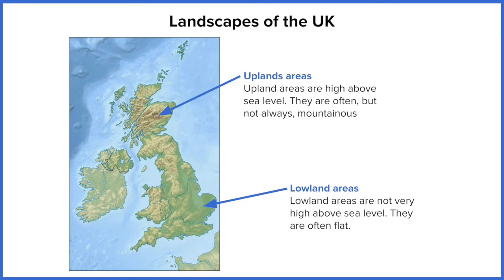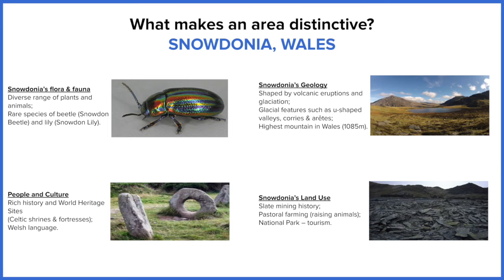Let's have a look at one example of a distinctive landscape. In this case we're going to look at Snowdonia in northern Wales. Now, upland and lowland areas are found in quite a few different places around the UK, so that doesn't necessarily make them distinct. But we can look in more detail at four different factors that make an area distinct.